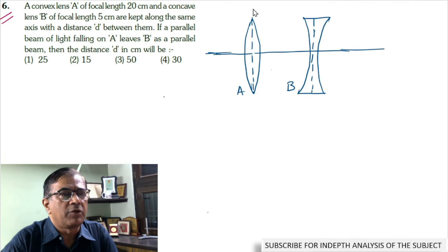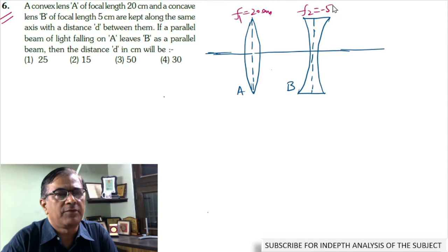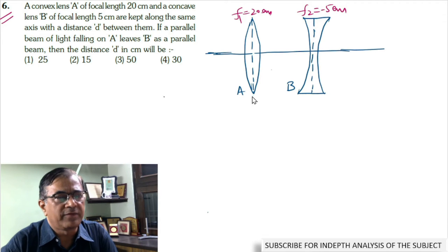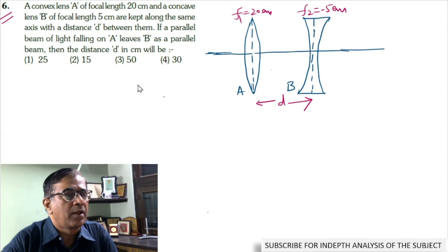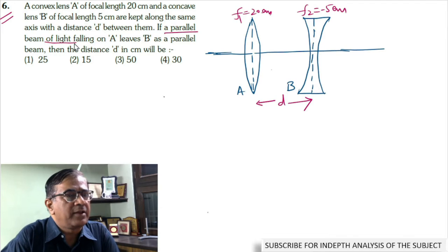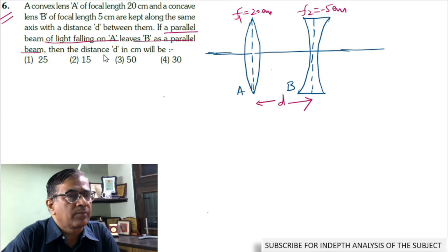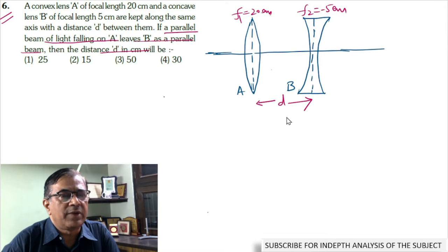In problem number 6, a convex lens of focal length 20 cm and a concave lens of focal length 5 cm are placed coaxially. Separation between the two lenses is D. As per the problem, a parallel beam of light that falls on A leaves B as a parallel beam. We are supposed to find the distance between the two lenses.